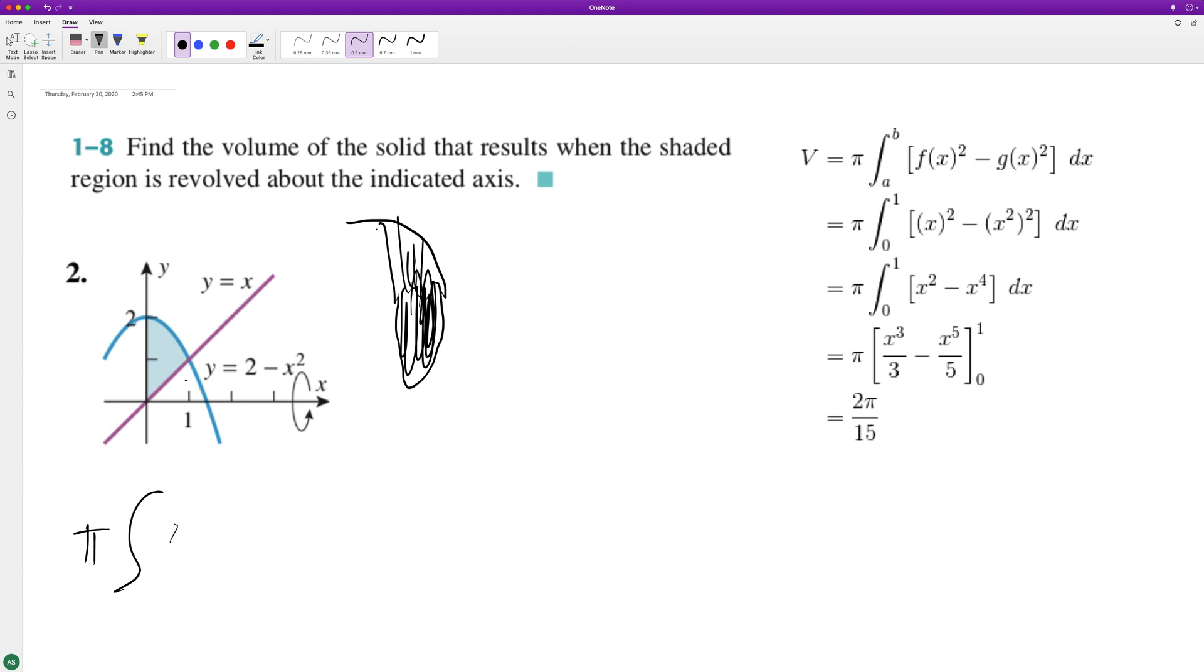But what we do is we square both of these. So we have our 2 minus x squared squared minus our x, and then we square it. And that's how we subtract that volume and we get the shaded region.